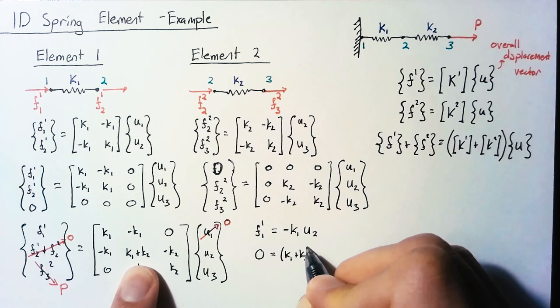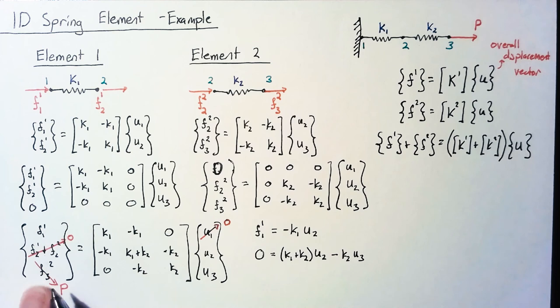For our final equation, our left-hand side is P. Our right-hand side is going to be negative K2U2 plus K2U3.